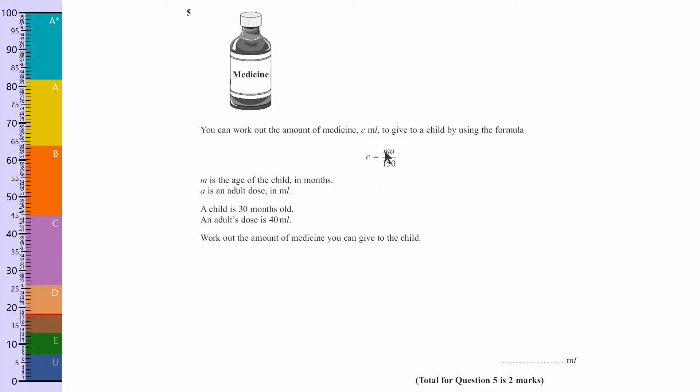So it says C equals MA over 150. M is the age, which is 30. A is the adult dose, which is 40. So you're going to end up with 30 times 40, and let's move this here.